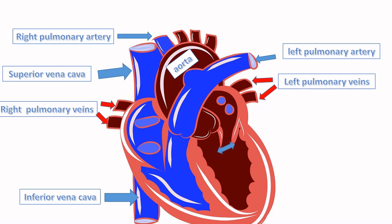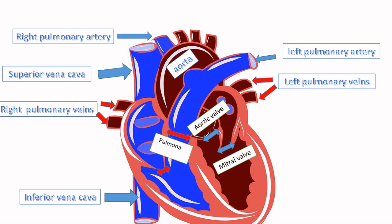Now we see the connection between the chambers of the heart and main blood vessels. The first valve is the aortic valve, which is between the aorta and the left ventricle. The second is the mitral valve or bicuspid valve. The third is the pulmonary valve, which is between the pulmonary trunk and the right ventricle. The fourth is the tricuspid valve, which is between the right atrium and the right ventricle.